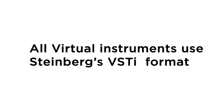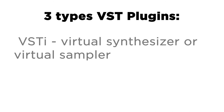VST plugins come in three flavors. First: VST Instruments. These generate audio and are generally either virtual synthesizers or virtual samplers — many recreate the look and sound of famous hardware synths. Some prominent VST instruments include Discovery, Nexus, Salent One, Massive, FM8, Absinthe, Reactor, Superior Drummer, and my personal favorite, Omnisphere Keyscape.